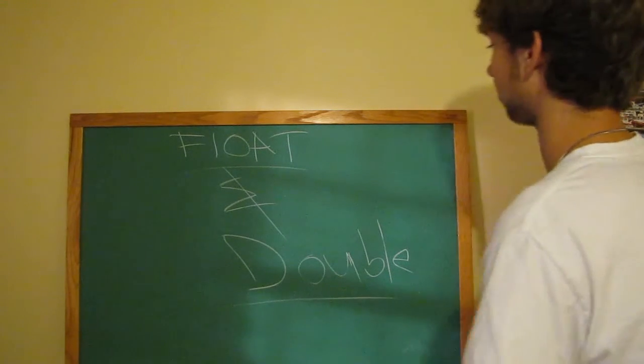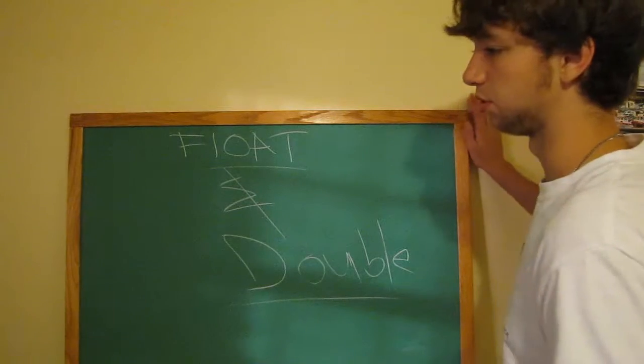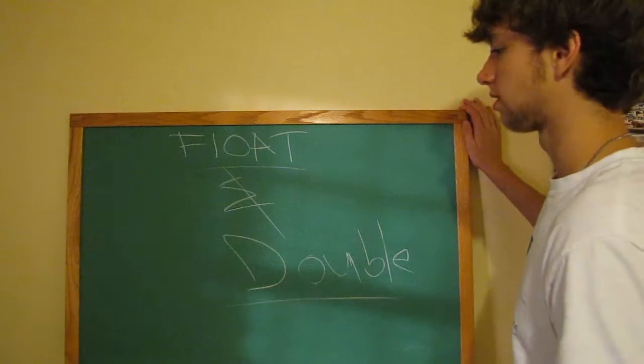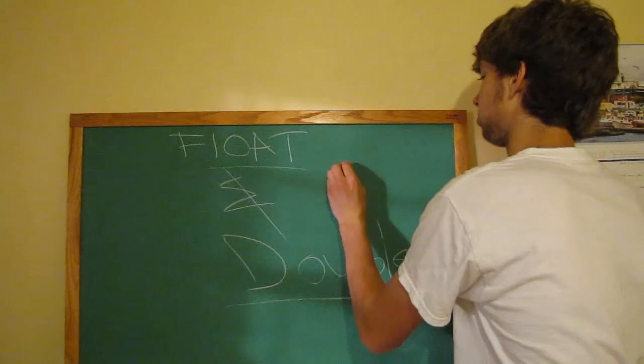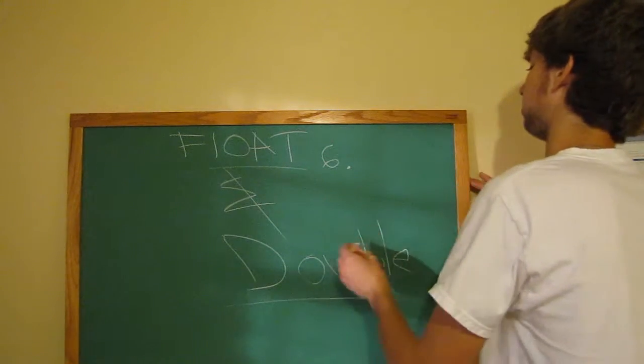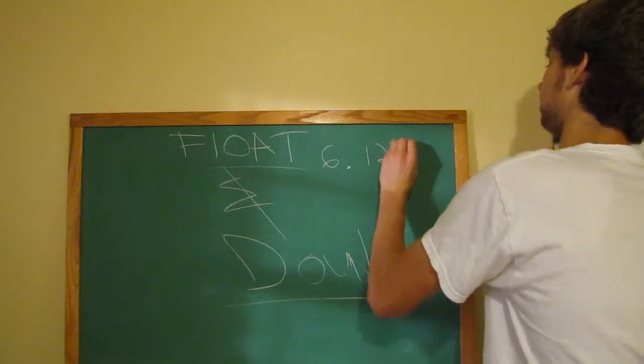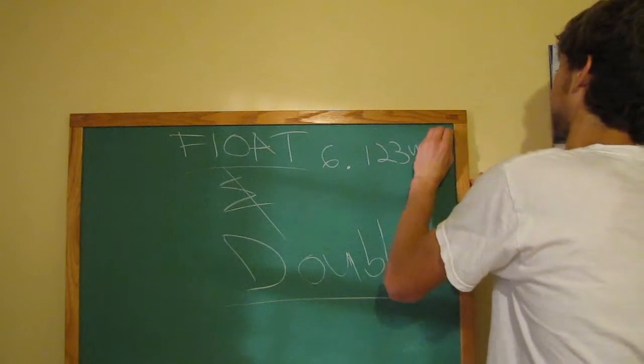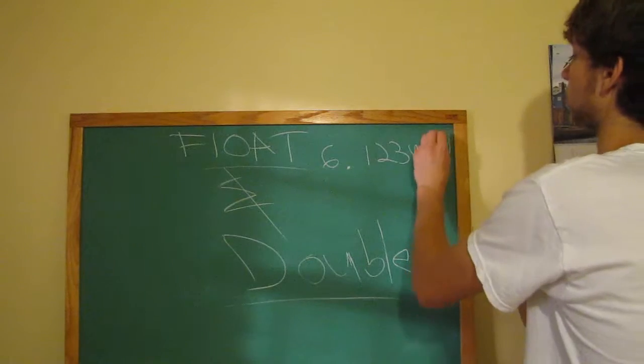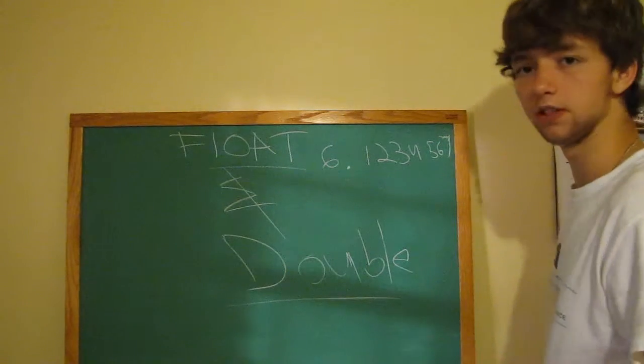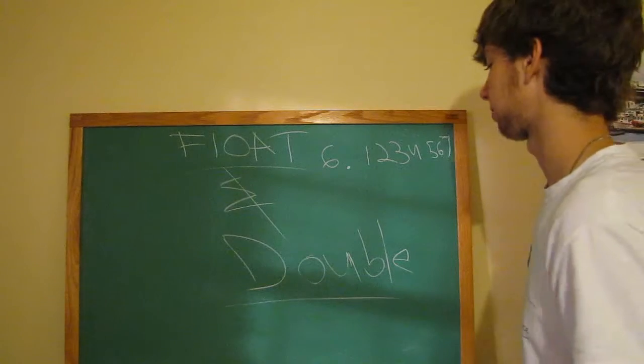All right, now, a float, it's accurate to up to approximately 7 decimal spaces. So, we got a decimal, so let's say a 6.1234567. Any more after that, when you do math, or actually, when you just store the number, and you retrieve it, it can change on you and be inaccurate.